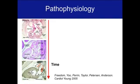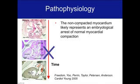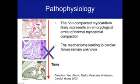The pathophysiology is not very well understood. These images here show human hearts at different stages during embryological development. You can appreciate at the very early stage that there is a very thick trabecular or non-compacted layer and a very thin compact layer. This then changes in ratio to a more compact, thicker compact layer and a thinner trabecular layer. It is assumed that left ventricular non-compaction reflects an embryological arrest of normal myocardial compaction. However, the mechanisms leading to cardiac failure remain unknown.